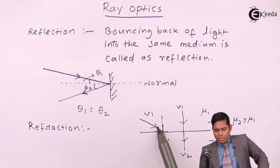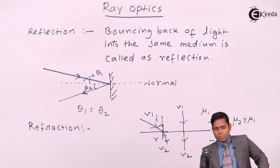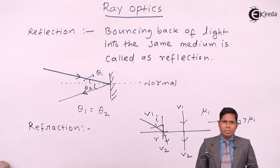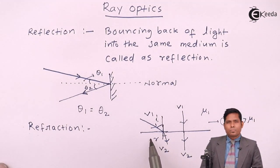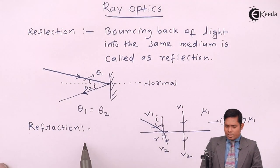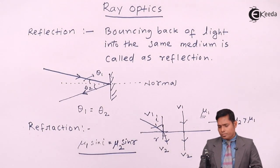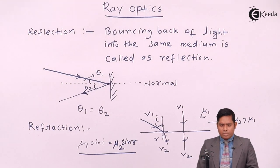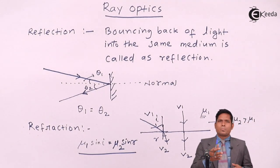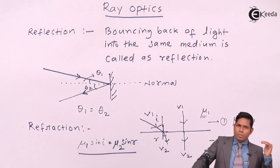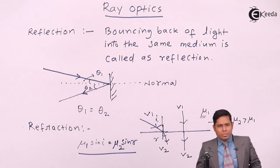In refraction, this is the angle of incidence and this is the angle of refraction. We also use Snell's law, which is important in ray optics. Snell's law states that mu one into sine of the angle of incidence is always equal to mu two into sine of the angle of refraction. So to summarize: reflection is when light traveling in one medium strikes a surface and comes back to the same medium; refraction is when light moves into another medium and travels through it. Thank you.